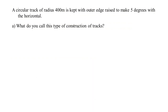A circular track of radius 400 metres is kept with the outer edge raised to make 5 degrees with the horizontal. What do you call this type of construction of tracks? The outer part raised is called banking of roads.